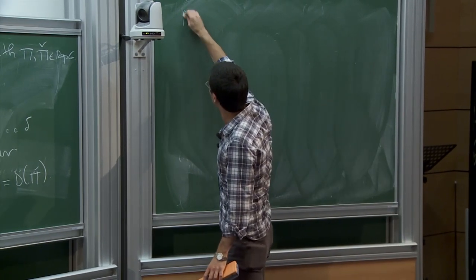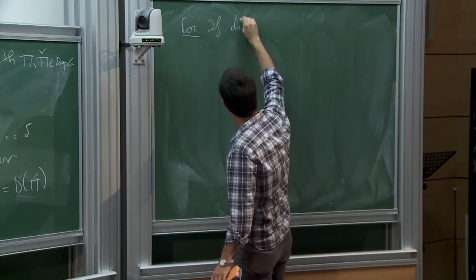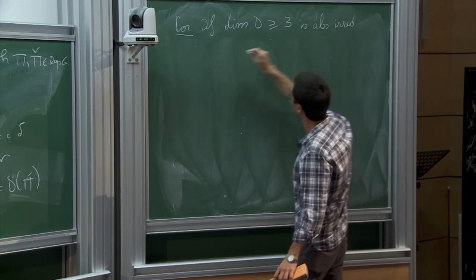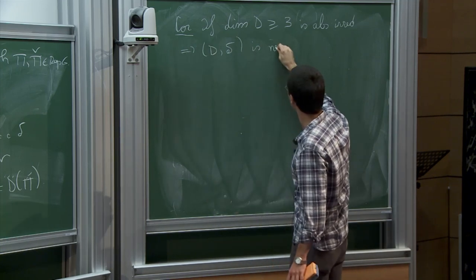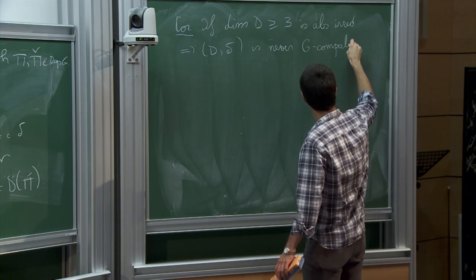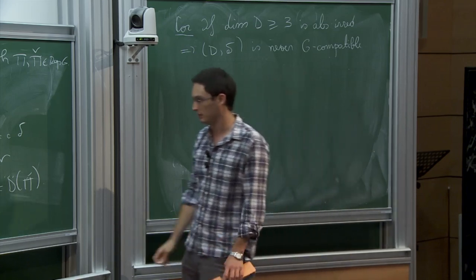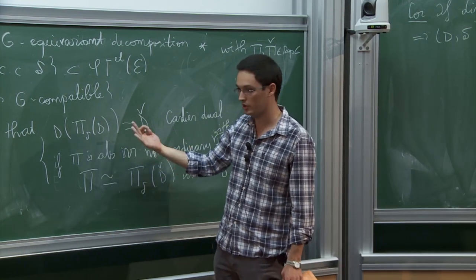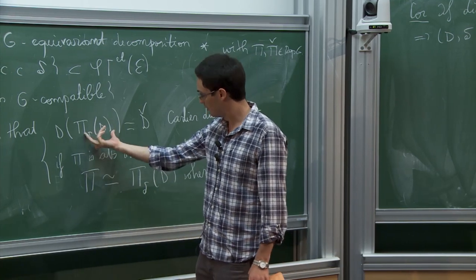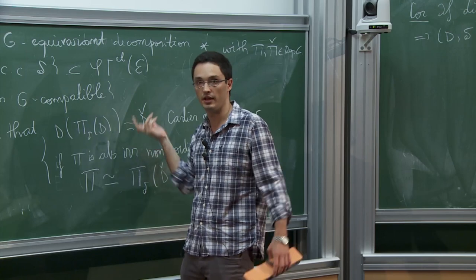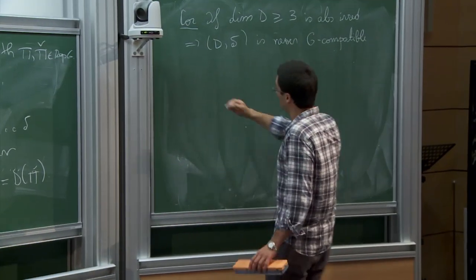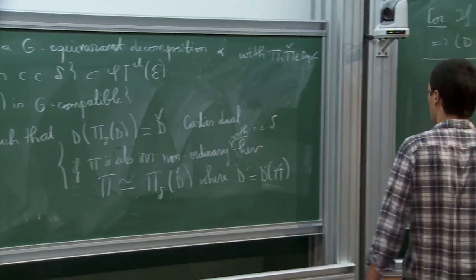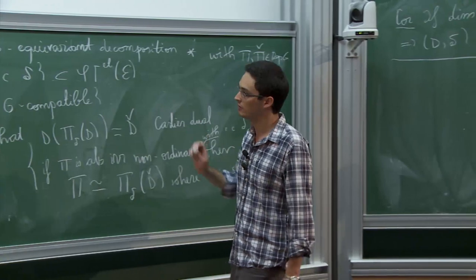This theorem combined with what Vitas explained shows quite a lot. For instance, if D is of dimension at least 3 and absolutely irreducible, then (D, δ) is never G-compatible. The point is that if it were compatible, it would give rise to some Banach representation π_δ(D), and you can control its reduction mod p, so the image via Colmez's functor must be of dimension at most 2, meaning Ď has dimension at most 2. But this combined with the study of reduction mod p will never give you the injectivity of the Montreal functor.